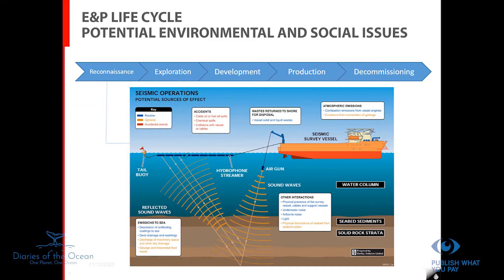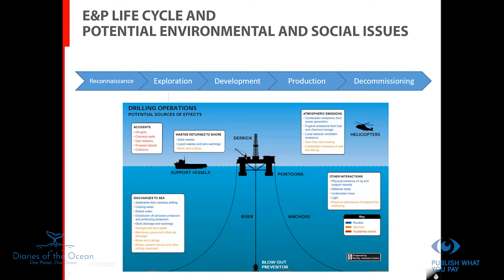The second phase is exploration. At this stage we already have a geological map and know where we might expect oil and gas. We get a rig — a mobile offshore drilling unit — position it above the well location, and start to drill. Drilling means using a drill bit to cut through rocks and make a hole to reach the reservoir. This activity is also associated with environmental impacts — atmospheric emissions from the rig itself due to combustion and generators on board.